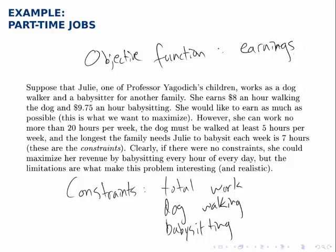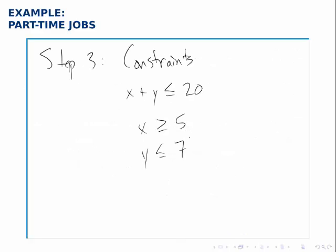The third constraint says that the longest she can babysit is 7 hours a week, so y has to be less than or equal to 7. At the same time, we'll add a constraint that isn't mentioned, which is that y has to be greater than or equal to 0. It's impossible to babysit a negative number of hours in a given week. So in general x and y both have to be greater than or equal to 0. Because x has to be greater than or equal to 5, we already have x greater than 0, so we don't need to write that down. But for y we write that y is greater than or equal to 0 and less than or equal to 7. These are our three constraints, and now we'll draw a picture.